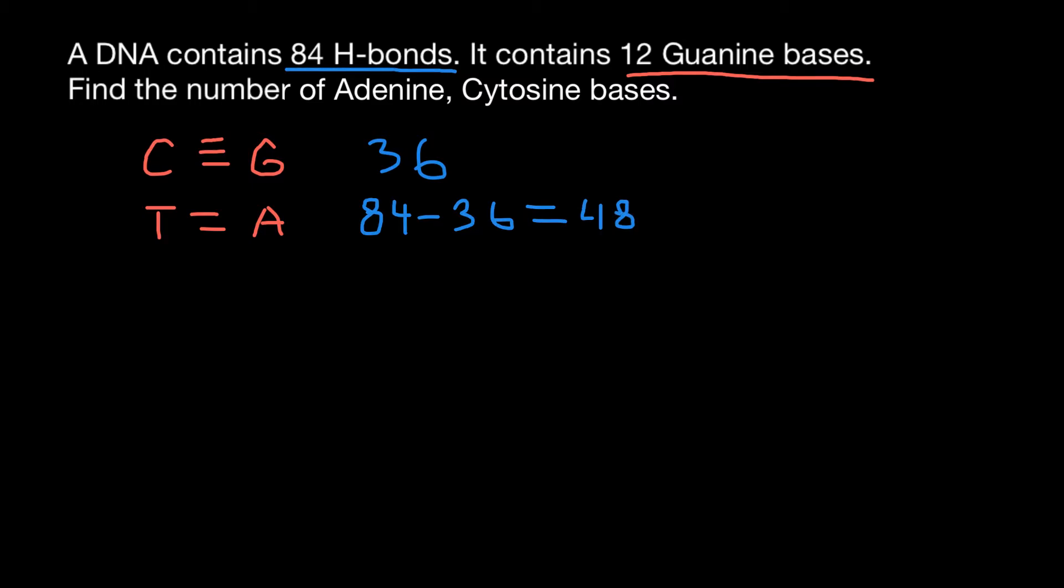So we have found the number of hydrogen bonds between thymine and adenine. And that means that we're actually going to have 24 pairs of thymine and adenine. So we just have to divide by 2.